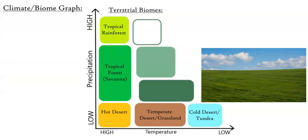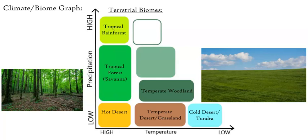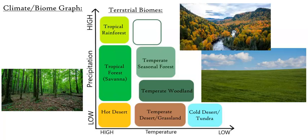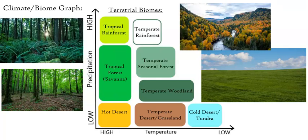And then we can look at the center of the graph, which is a mixture of both precip and temperature. And the three biomes will be the woodland temperate, the temperate seasonal forest, and finally the temperate rainforest. And we can also add in the extra two biomes, which is chaparral and the taiga or boreal forest.